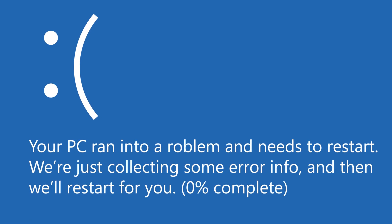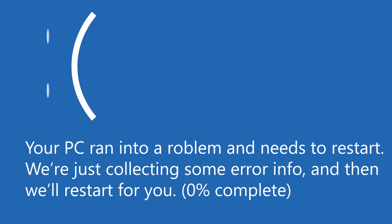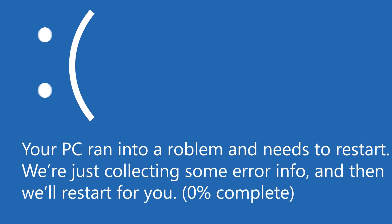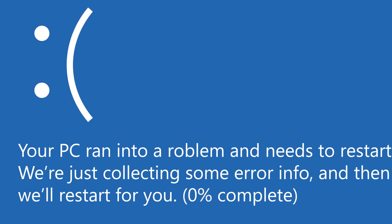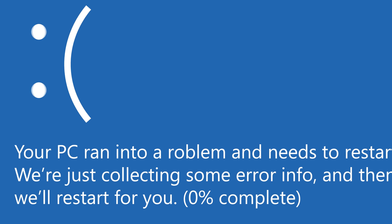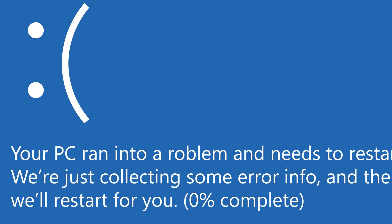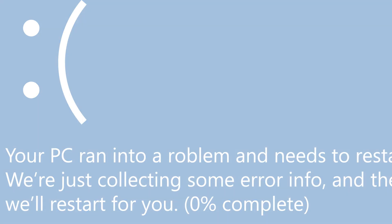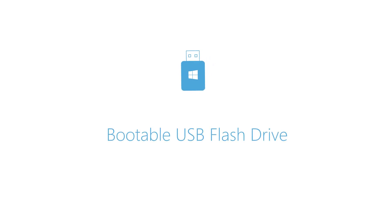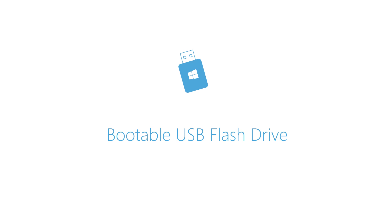Worst case scenario — let's say you've tried absolutely everything and nothing works, and Windows 10 is completely corrupted. If that's the case, you need to reinstall Windows 10 from a different source by using a bootable USB flash drive. If even this method does not work, it likely means your computer has a more serious physical or mechanical problem, and you may need to fix that or replace the computer entirely.